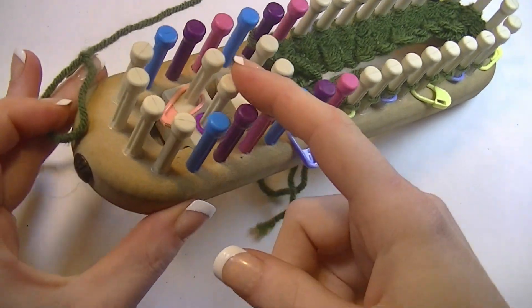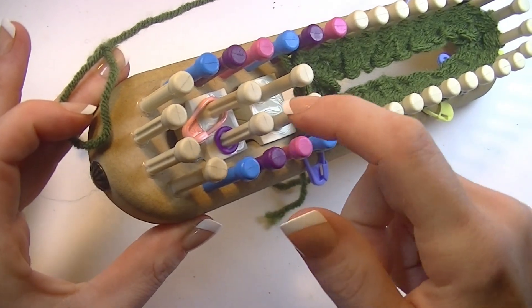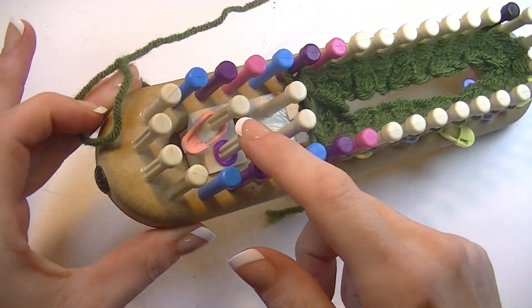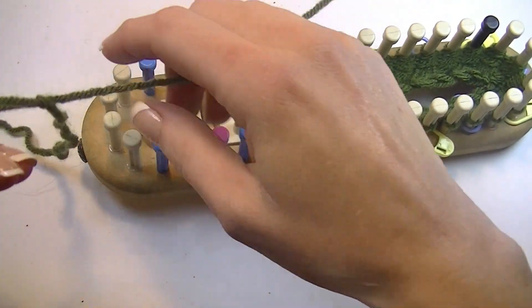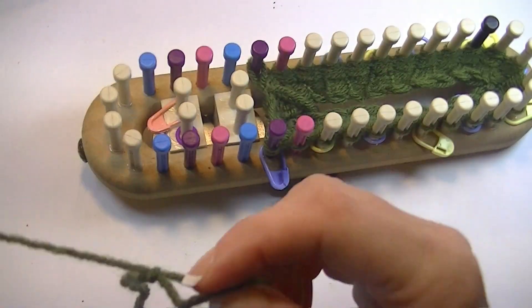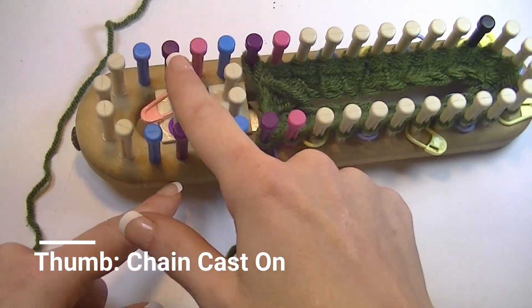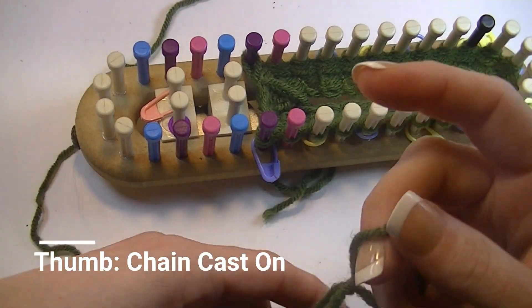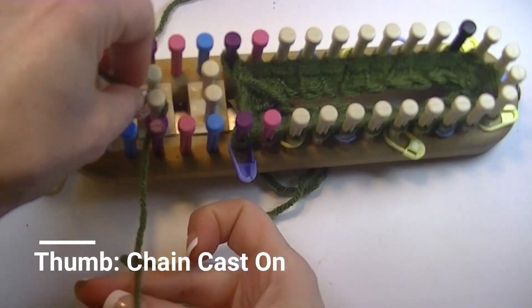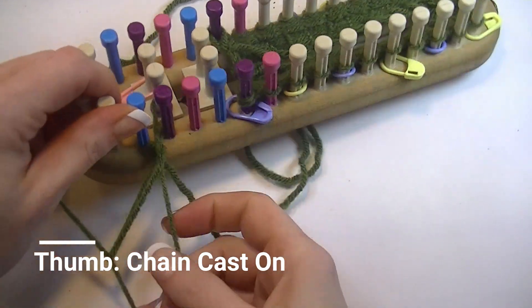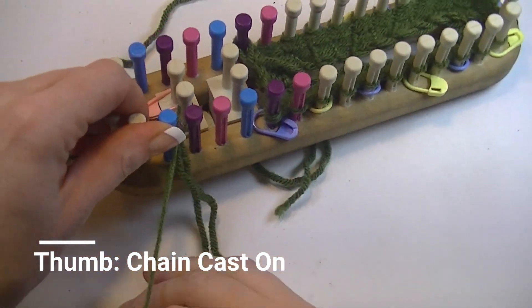We have moved the wedge up, but peg 0-2 on this wedge is still your starting peg. We will be casting on just these 10 pegs in a circle with our chain cast on the same as we did for the body.